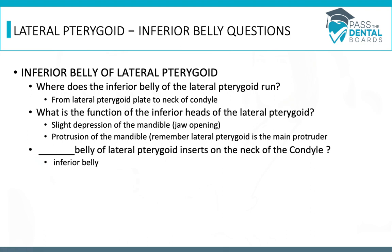What is the function of the inferior belly? Depression of the mandible — which is opening — and protrusion. This is the main protruder muscle. Which belly inserts on just the neck of the condyle? The inferior belly. The superior belly attaches to the neck of the condyle but also to the anterior portion of the disc.